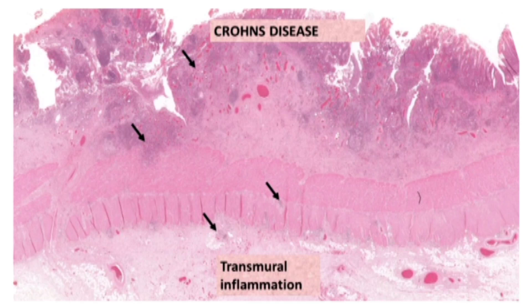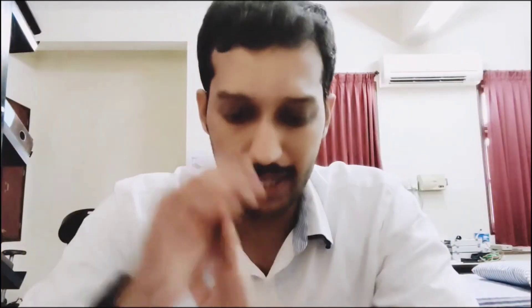Crohn's disease affects transmurally — it affects all layers including the mucosa, submucosa, and muscularis. The ulcers are deep, knife-like ulcers. In contrast, ulcerative colitis affects primarily the submucosal layer. So transmural involvement is characteristic of Crohn's disease, while submucosal involvement is characteristic of ulcerative colitis.